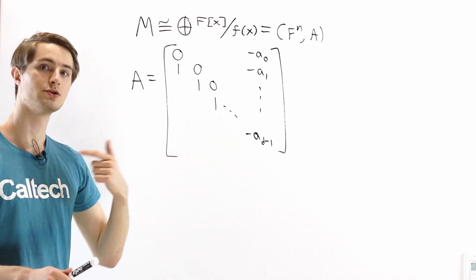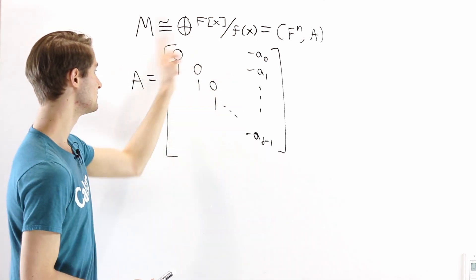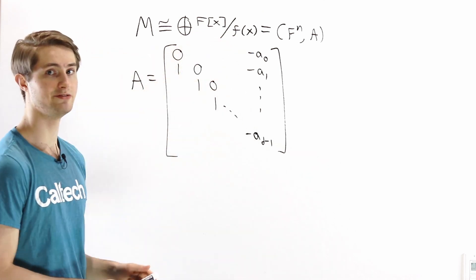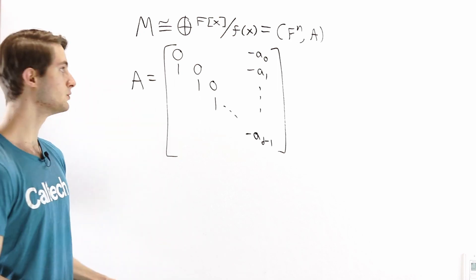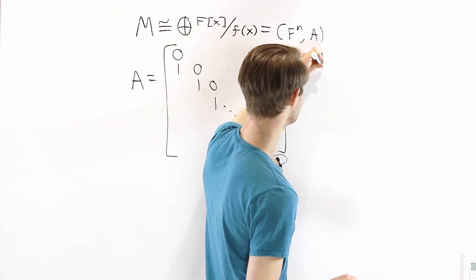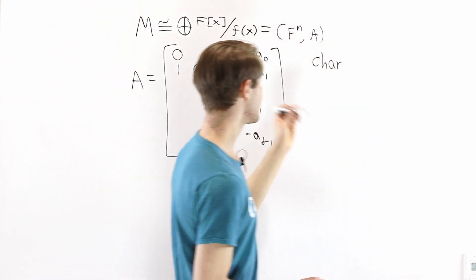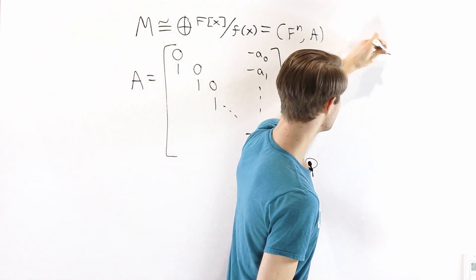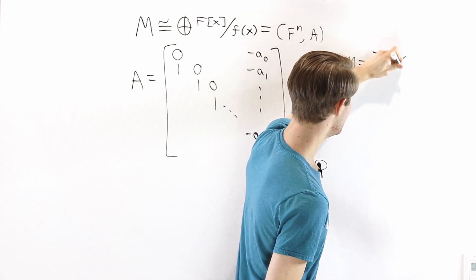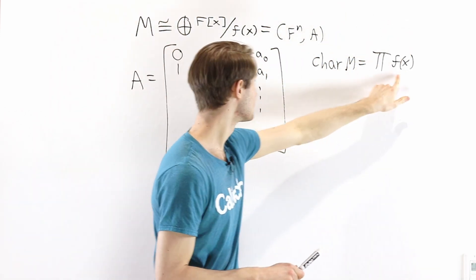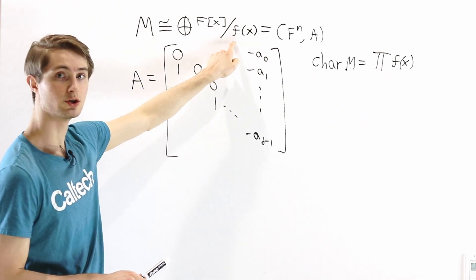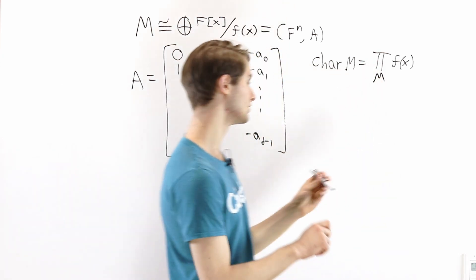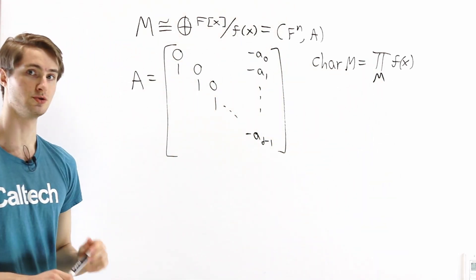The purpose of the characteristic polynomial is to relate some properties of this matrix with the properties of the corresponding fx module. So let's first define what we mean by the characteristic polynomial. The characteristic polynomial of a module M we can write as the product of f(x), where these f(x)'s come from the quotients of the components in the direct sum — over all components in the module M.